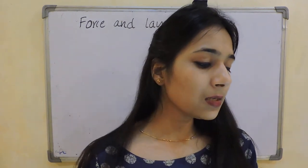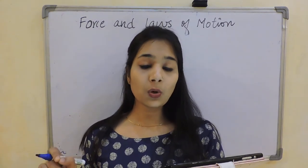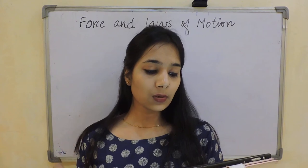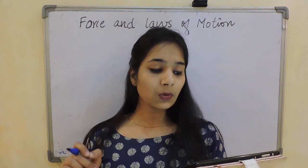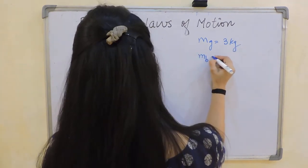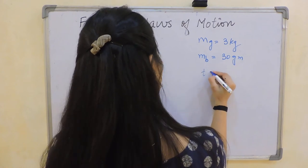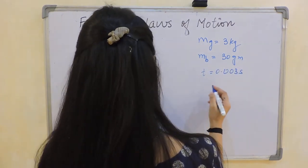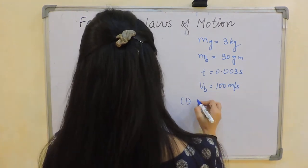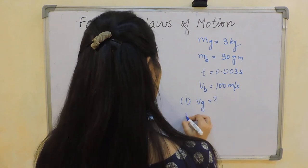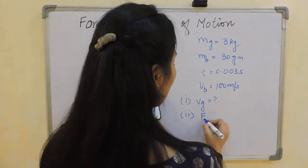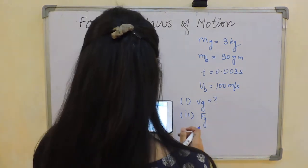Next: a gun of mass 3 kg fires a bullet of mass 30 grams. The bullet takes 0.003 seconds to move through the barrel and acquire a velocity of 100 meter per second. Calculate the velocity with which the gun recoils, and the force exerted on the gunman due to recoil. Let's solve this.